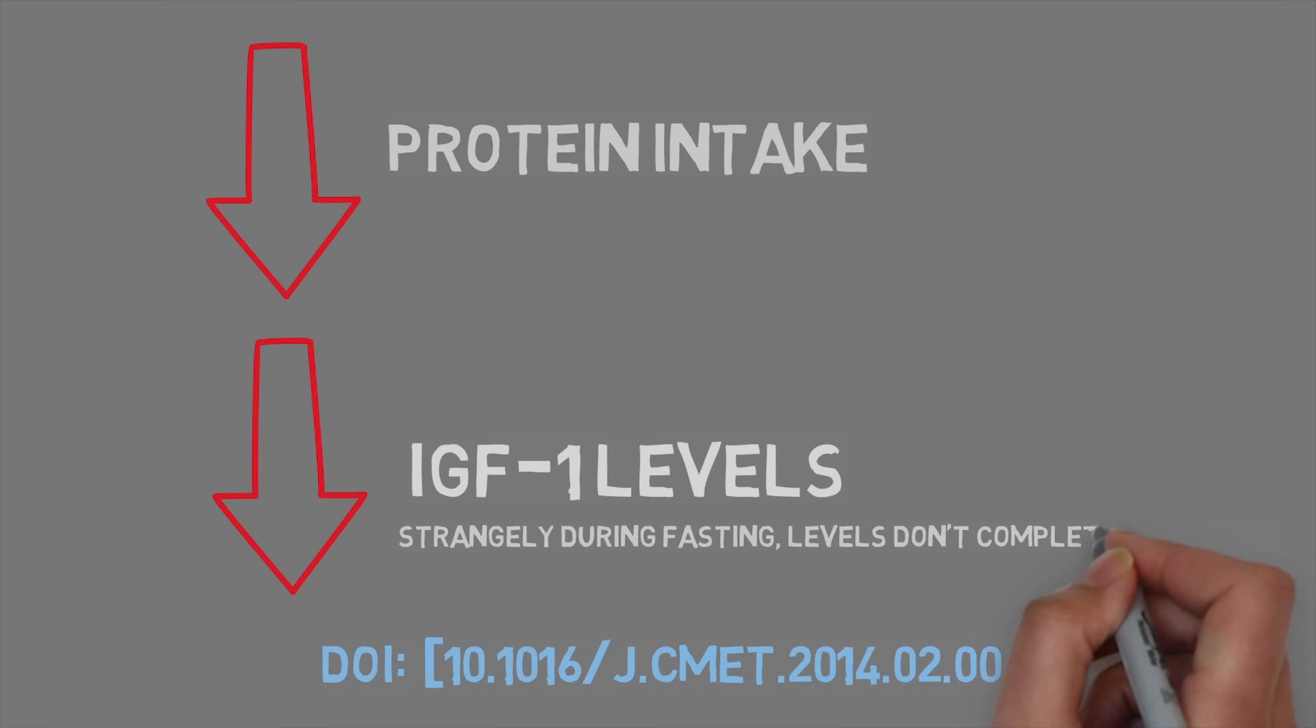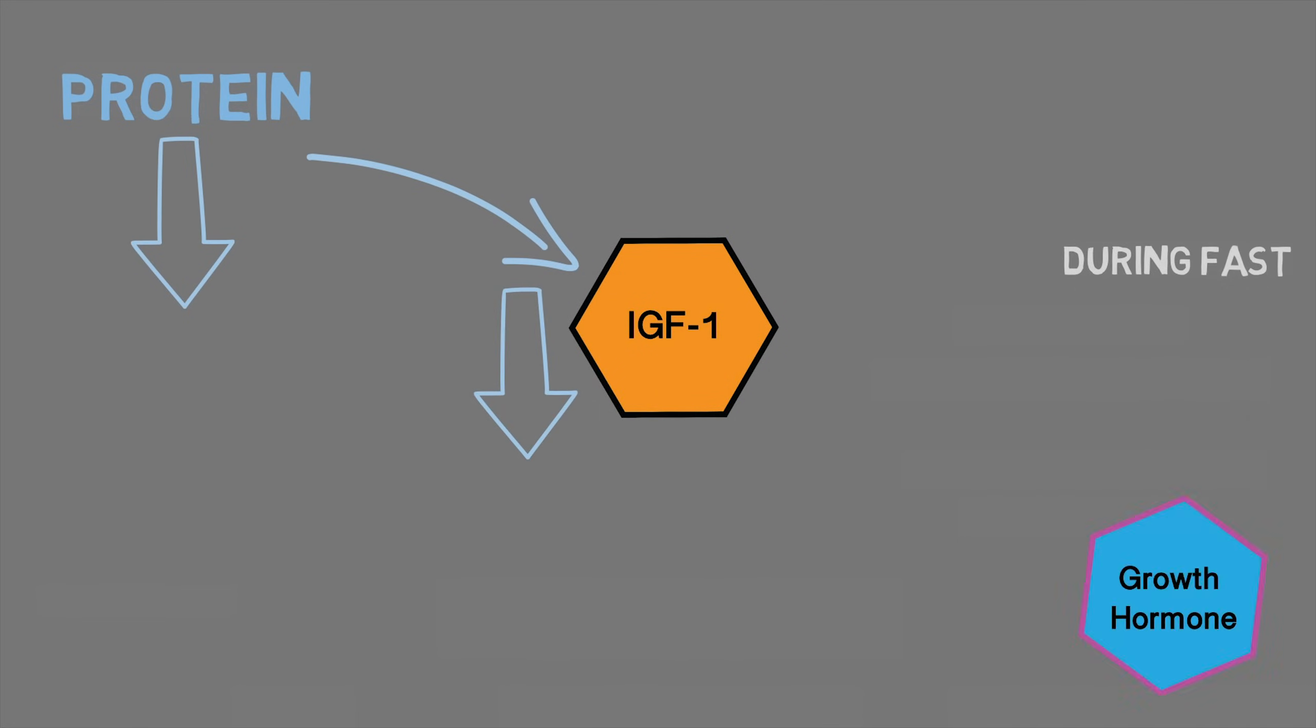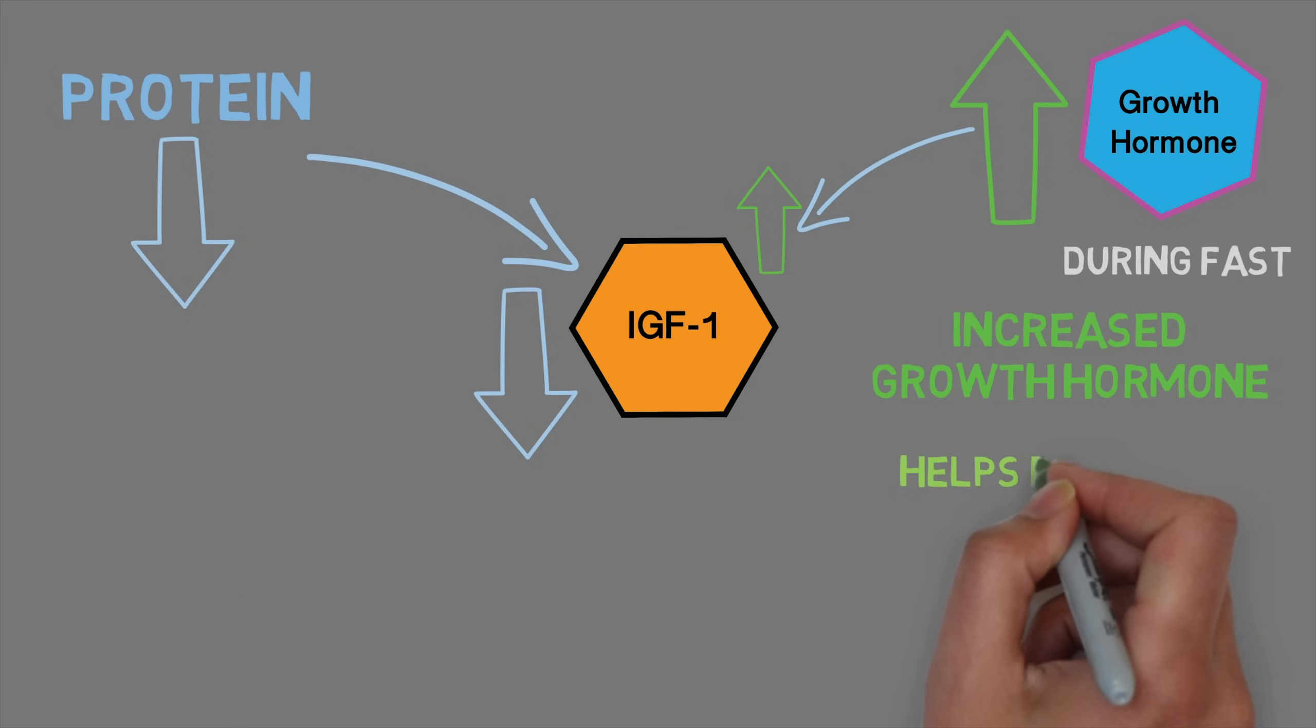And this gives us a clue as to what is really happening here. By kicking into overdrive producing growth hormone, the body isn't directly maintaining muscle. But by upping the production rate of growth hormone, the liver has more to make IGF-1 from. And the drop in this important muscle-supporting hormone, IGF-1, is significantly reduced. The body knows that without protein intake, IGF-1 levels will drop, which would risk our muscles. So it is compensating for this by releasing additional growth hormone to make up for some of this difference.